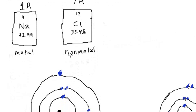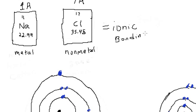When you have a metal and a non-metal, you're going to form ionic bonding. In ionic bonding, you're going to have one atom giving up an electron, and you're going to have another atom gaining that electron.